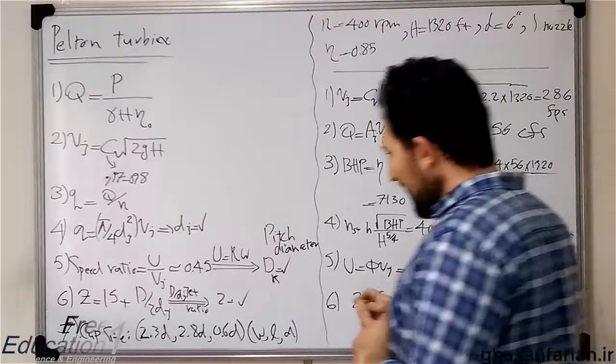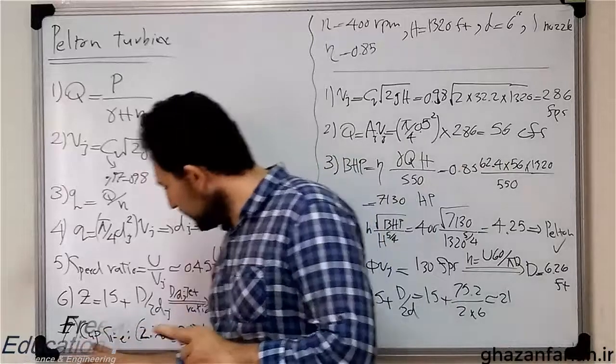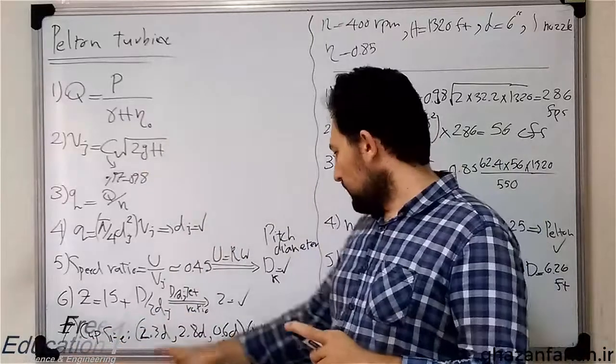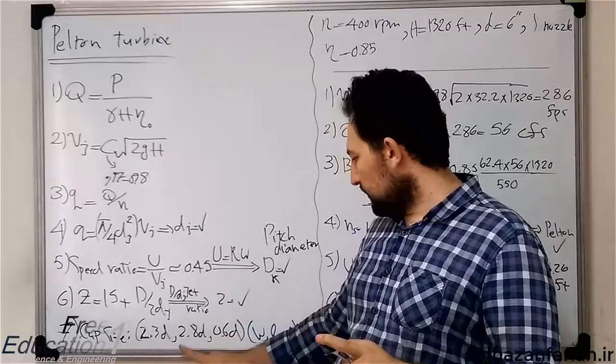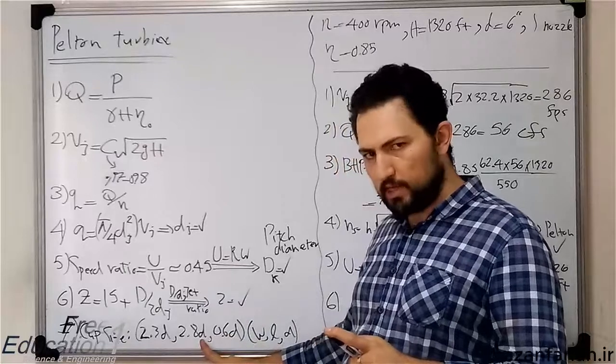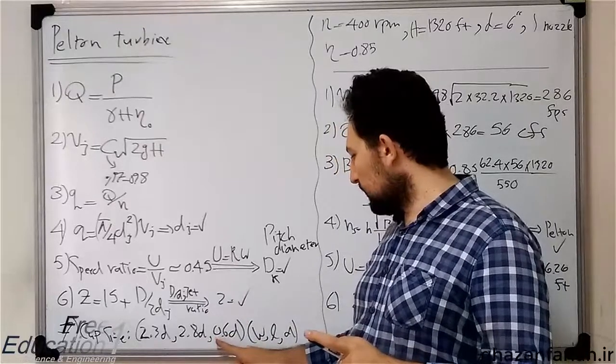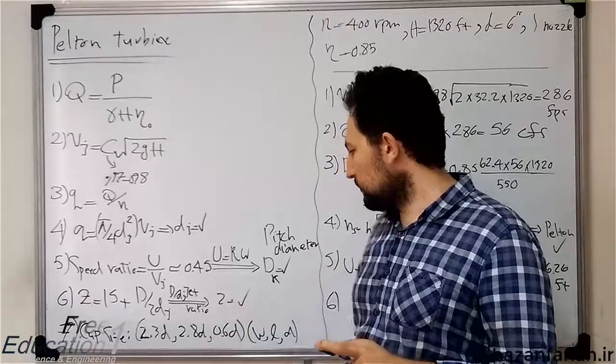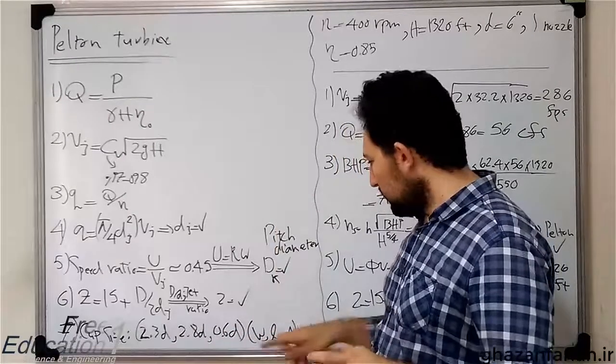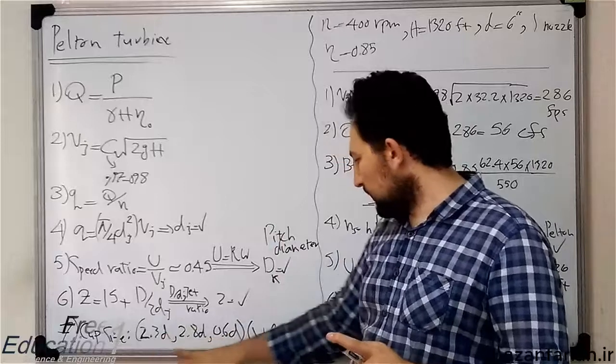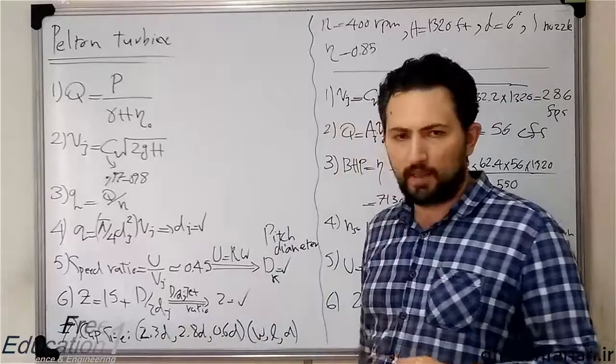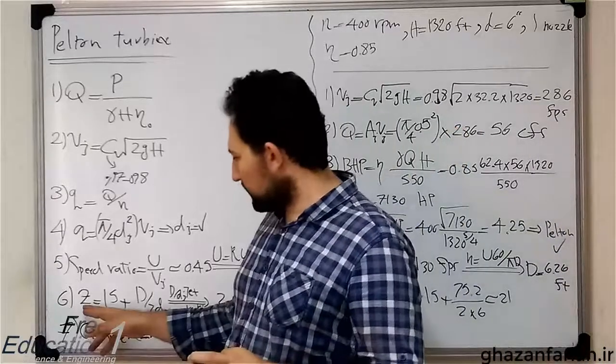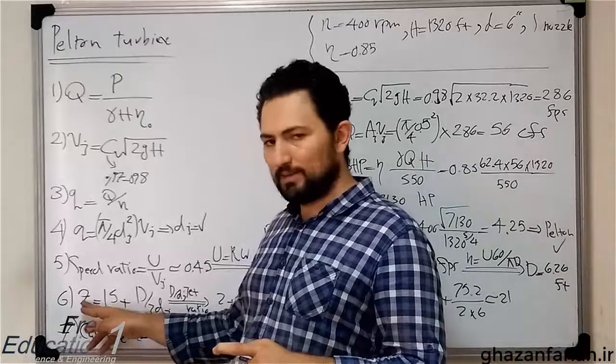And at the last step, you can compute the size of cup: 2.3 Dj, 2.8 Dj, D sub j, and 0.6 Dj. Dj is the jet diameter. These are the widths, the lengths, and the depths of the cups. The number of cups is computed in item 6, and here is the geometrical size of the cup.